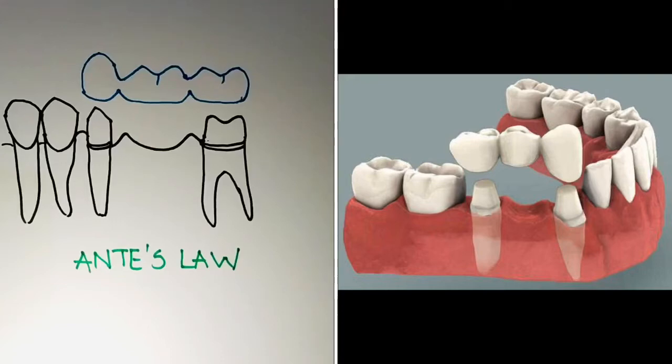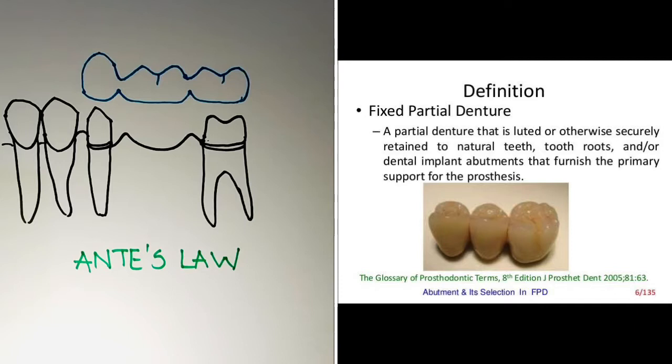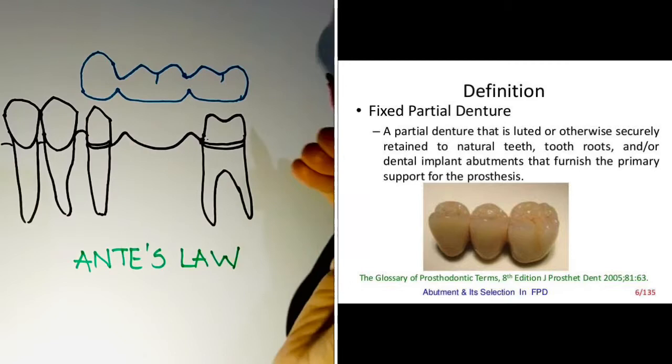Hello everyone, welcome back. The topic for today is Ante's Law from fixed partial dentures in prosthodontics. First, before proceeding into Ante's Law, I'll tell you about what a fixed partial denture is. A fixed partial denture is a partial denture that is cemented to the natural teeth or roots which furnish the primary support to the prosthesis. This definition is given by the Glossary of Prosthodontics.